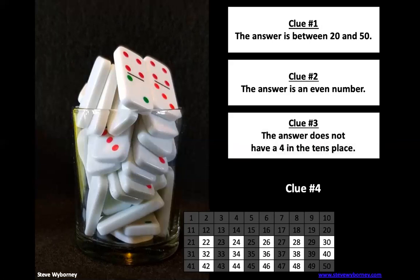Clue number three says the answer does not have a four in the tens place. In a two-digit number, which number's the tens place? Is it this one or is it this one? That's right. In the case of 48, the four is in the tens place and the eight is in the ones place.